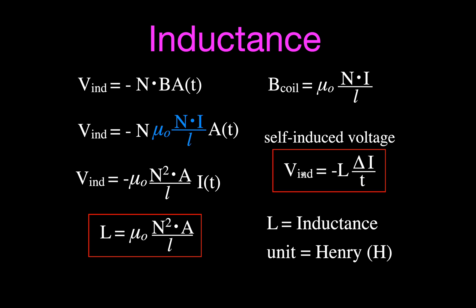The minus sign doesn't mean the self-induced voltage is less than zero — it just means the self-induced voltage is of opposite polarity, trying to resist that change in current. So this is the inductance equation, and this is the self-induced voltage equation.